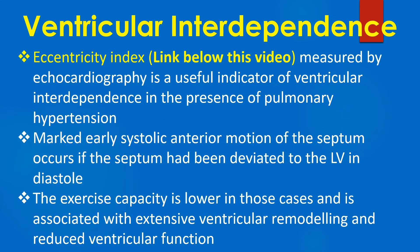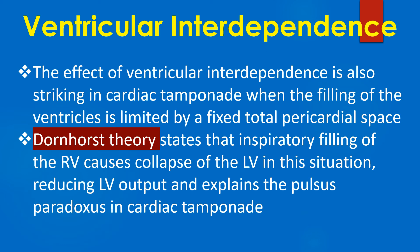Eccentricity index measured by echocardiography is a useful indicator of ventricular interdependence in the presence of pulmonary hypertension. Marked early systolic anterior motion of the septum occurs if the septum had been deviated to the LV in diastole. The exercise capacity is lower in those cases and is associated with extensive ventricular remodelling and reduced ventricular function.